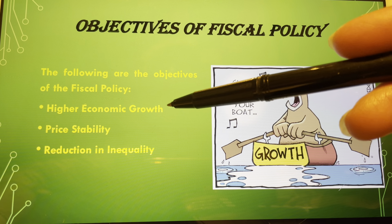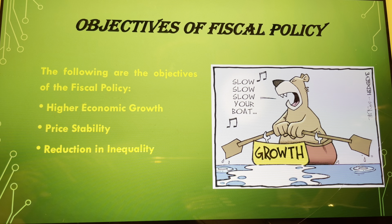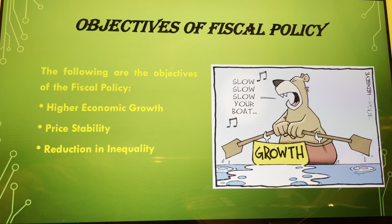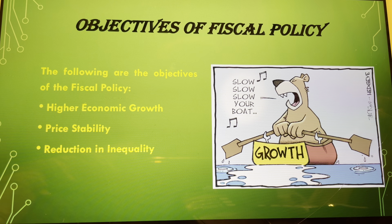Higher economic growth is the foremost objective of fiscal policy, because in developing countries there is a crisis of higher economic growth and the government always keeps a target through which the speed of economic growth can be increased. The second major objective is price stability — controlling taxes or money supply — so that prices can remain stable.